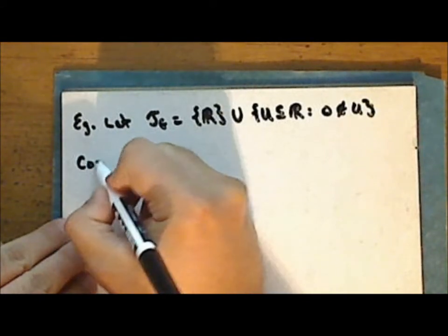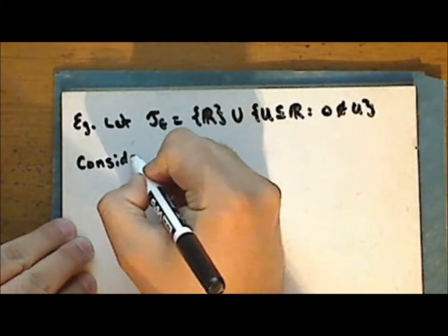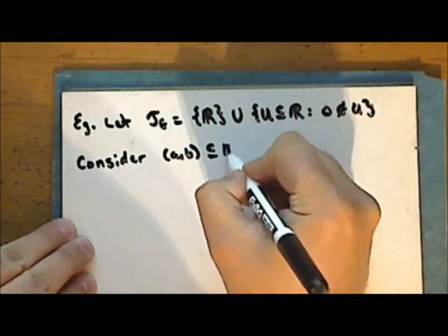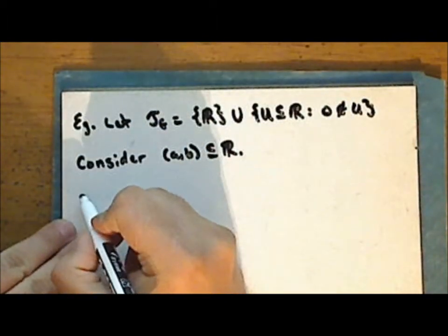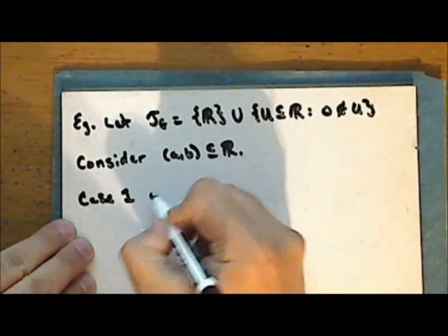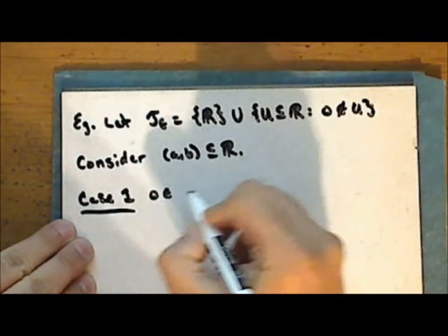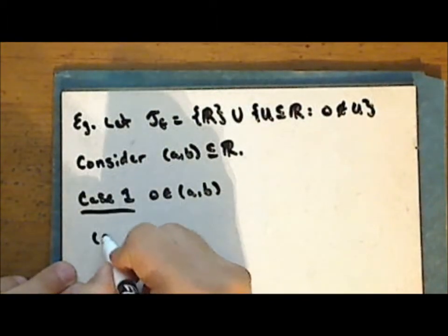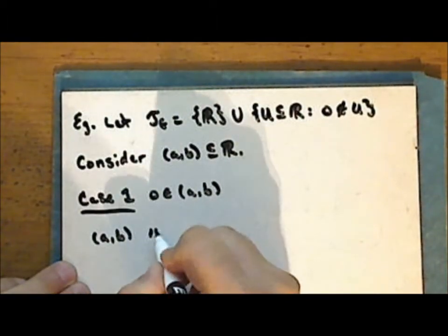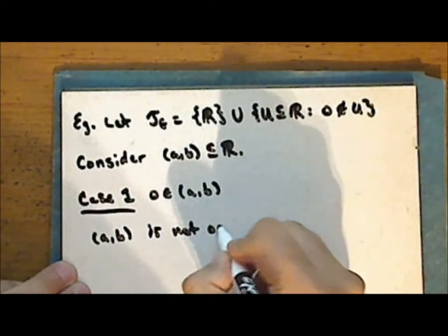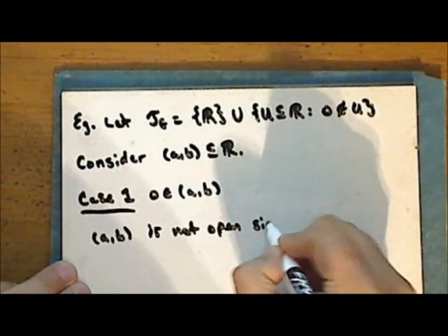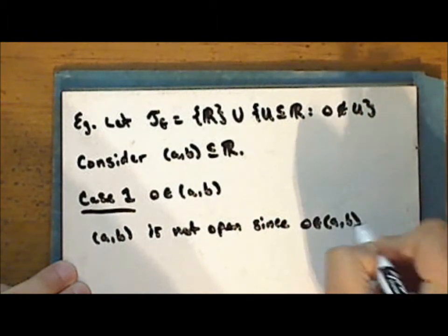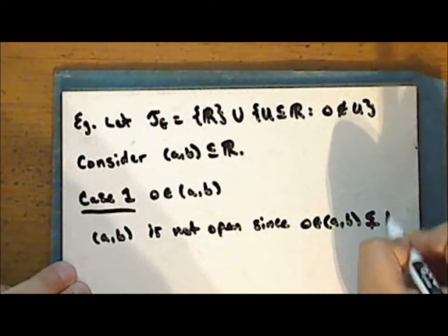We are going to consider the interval from a to b as a subset of the reals. There are two cases. Case one: zero is in the interval from a to b. Then the interval from a to b is not open, since zero is in this interval and this interval is a proper subset of the reals.